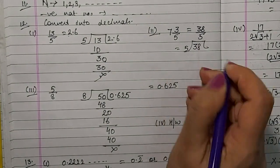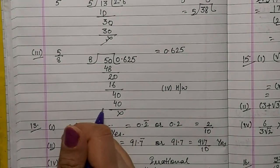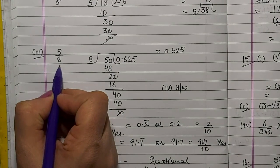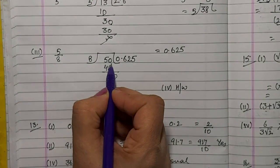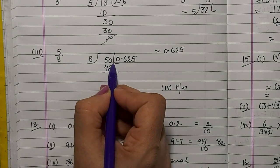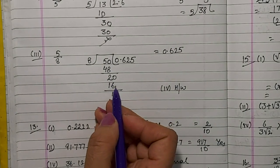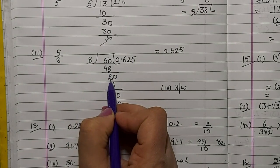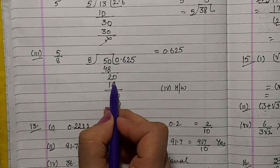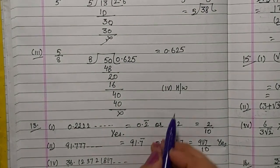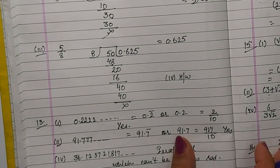Third part: 5 by 8. The numerator is smaller than the denominator, so in the first step we put a zero with 5, making it 50. When we have 50, we write 0 point — decimal comes in the first step. Then divide: 8 sixes are 48, 2 left; 28, then 16, 4 left; 48. Division is complete. Fourth part is your homework.